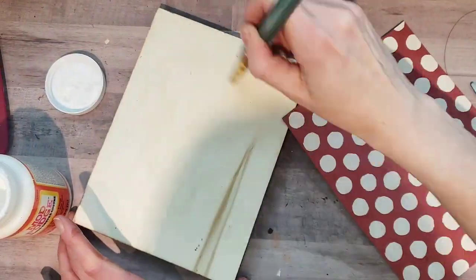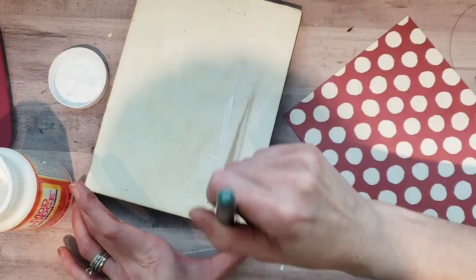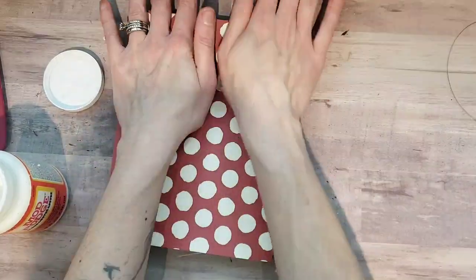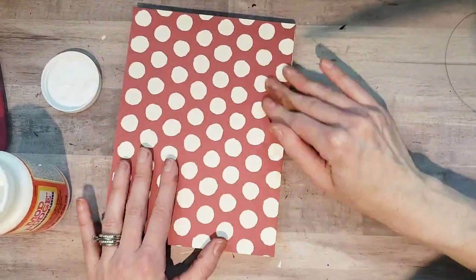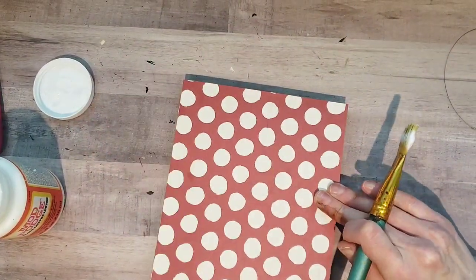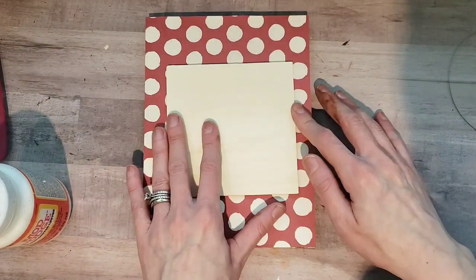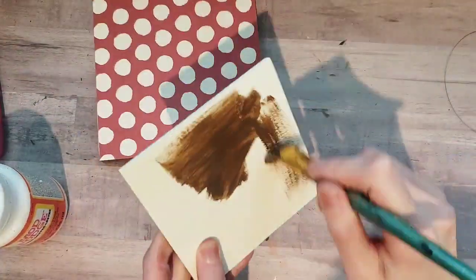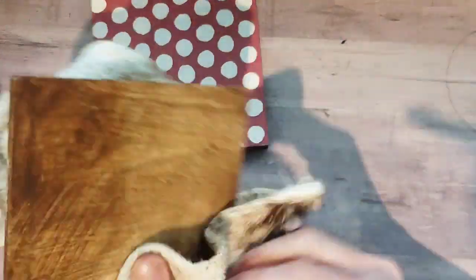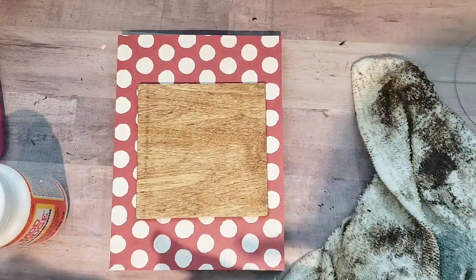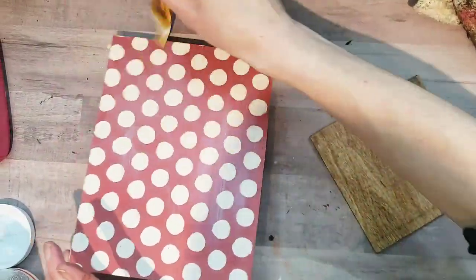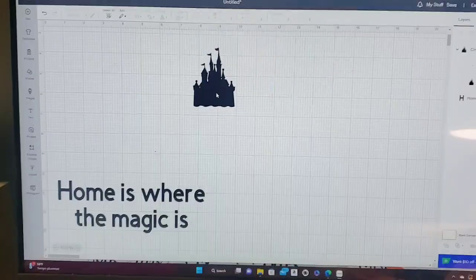Then I'm going to take some Mod Podge. I like to do a light coat of Mod Podge. Some people like to do a heavy coat. It all depends on you. You can even stick this paper to the wood with a glue stick. Then I'm sticking it right onto that wood frame. After that, I decided to make sure the corners are really gooped up. I just like to do that. And then I'm putting another coat of Mod Podge on top of the scrapbook piece of paper.